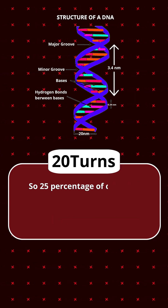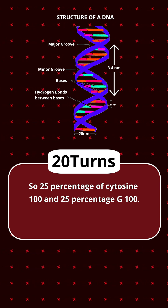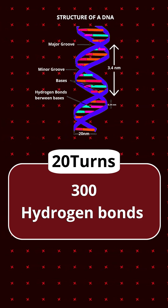25% is cytosine — that is 100 — and guanine is also 100. Between them a triple hydrogen bond is present, so 100 into 3 gives 300 hydrogen bonds.